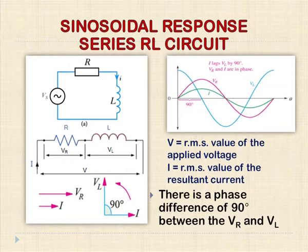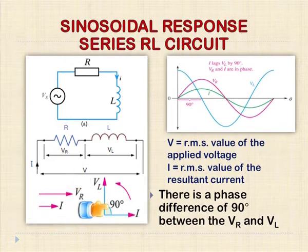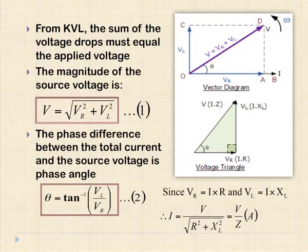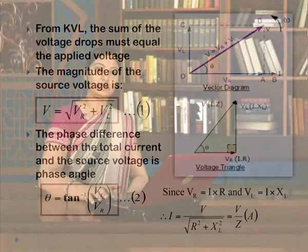Here we can see that Vr is in phase with the current I, and Vl is leading the current by 90 degrees. So there is a phase difference of 90 degrees between Vr and Vl. To find the resultant voltage, which is equal to the supply voltage, these two voltage components can be added vectorially by constructing the vector or phasor diagram.